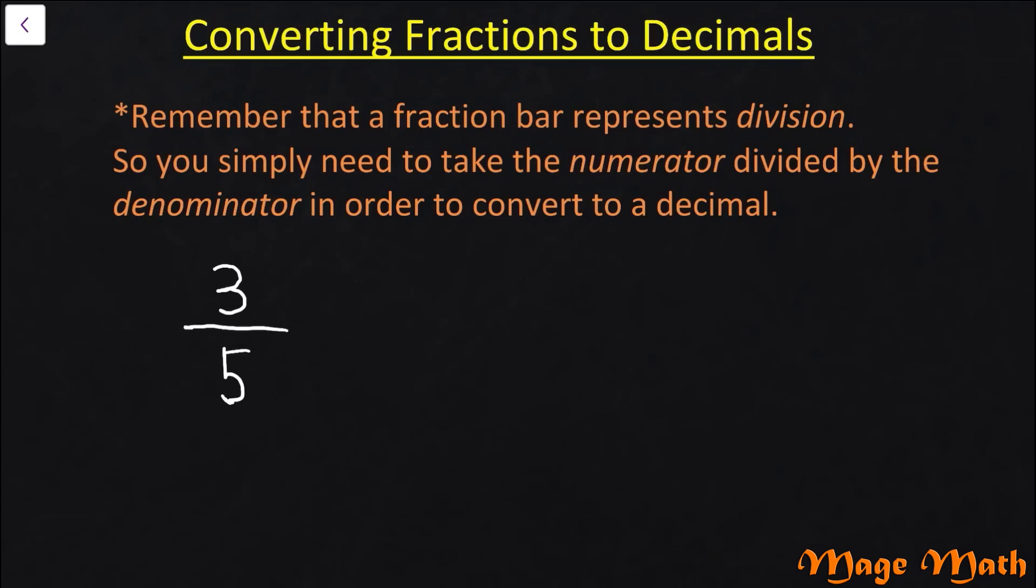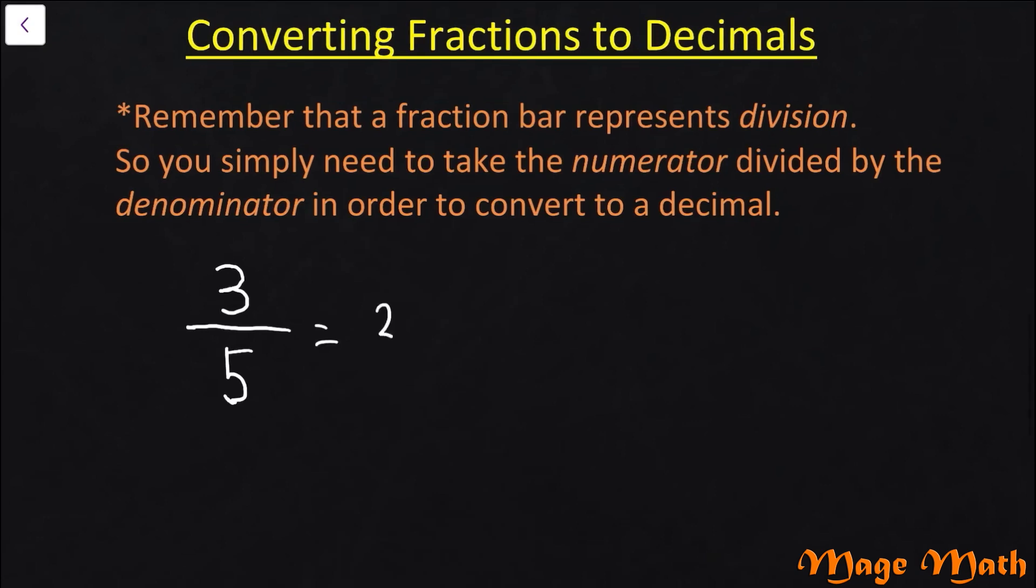So for example, if we see that we have three-fifths here as a fraction, when you see 3 over 5 as a fraction that literally is just meaning you need to take 3 divided by 5. Any fraction you have is simply a division problem just being expressed a little differently than what you might be used to.